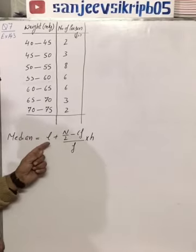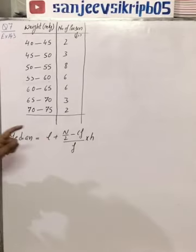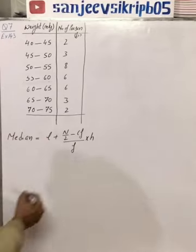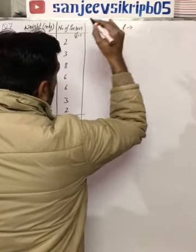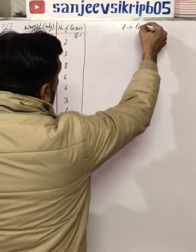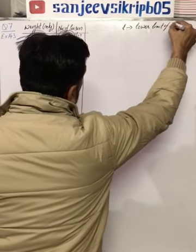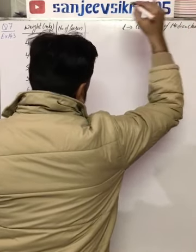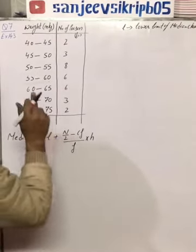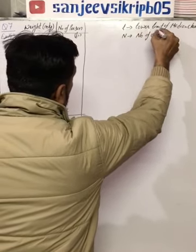Before solving this median and putting the values of these terms, let's discuss what these terms are in this question. First, L is the lower limit of median class. Then N is the number of observations.